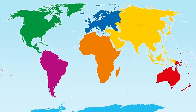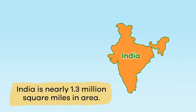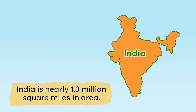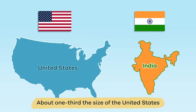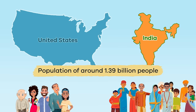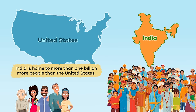Found on the continent of Asia, India is nearly 1.3 million square miles in area — about one-third the size of the United States. Yet, with a population of around 1.39 billion people, India is home to more than 1 billion more people than the United States.